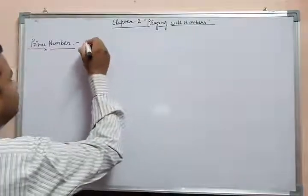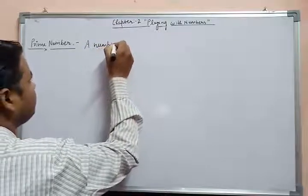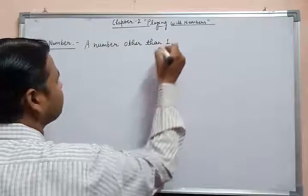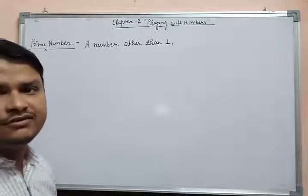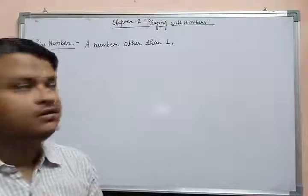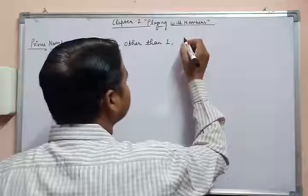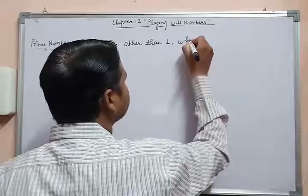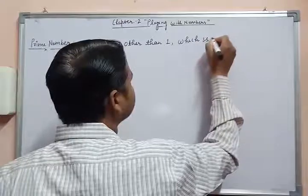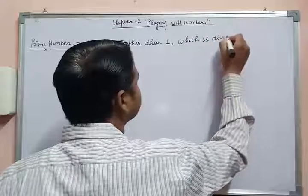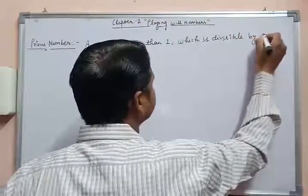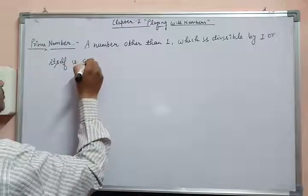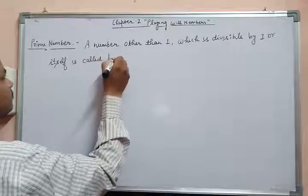So first of all we have to know which number is prime or not. A number other than one — students, this line is very important — a number other than one, meaning 'one ko chhod kar', which is divisible by one or itself.